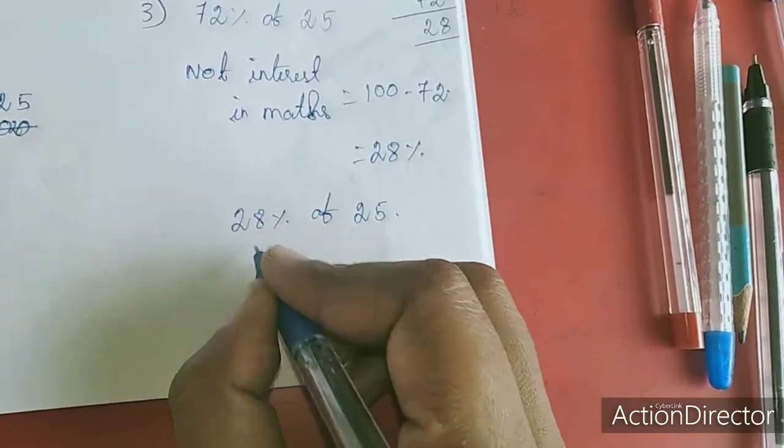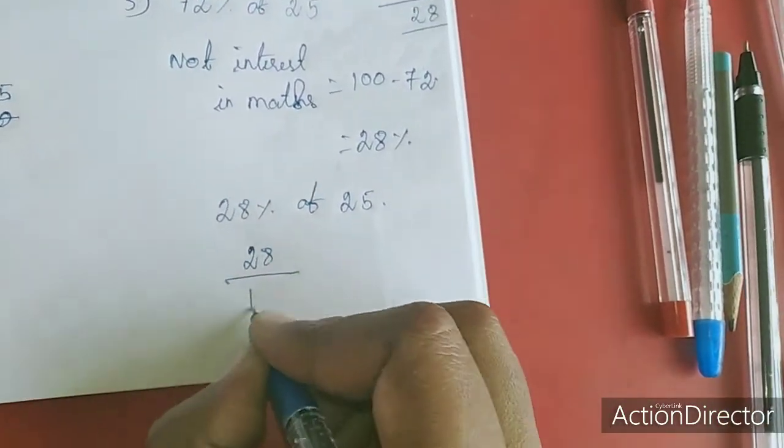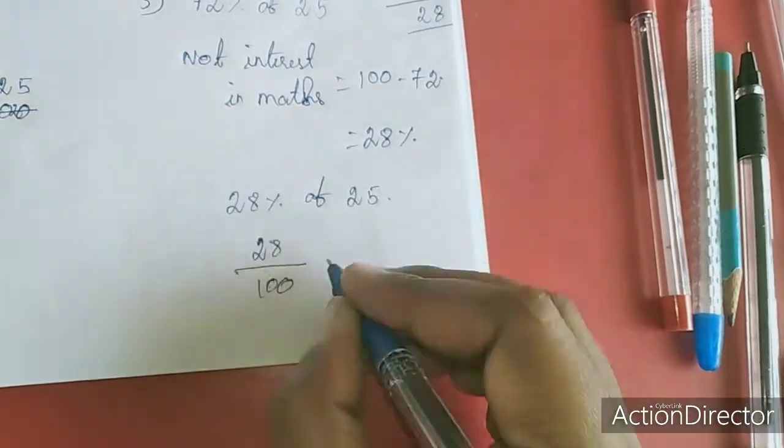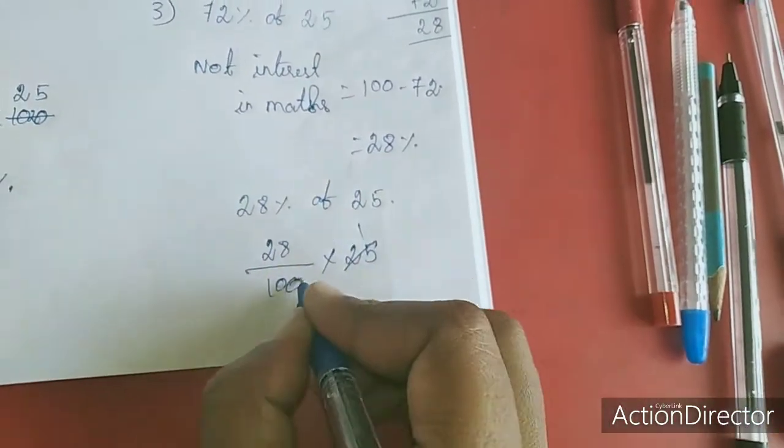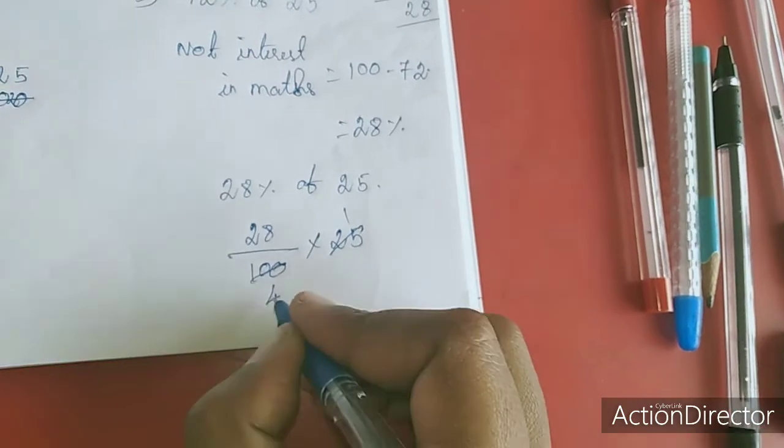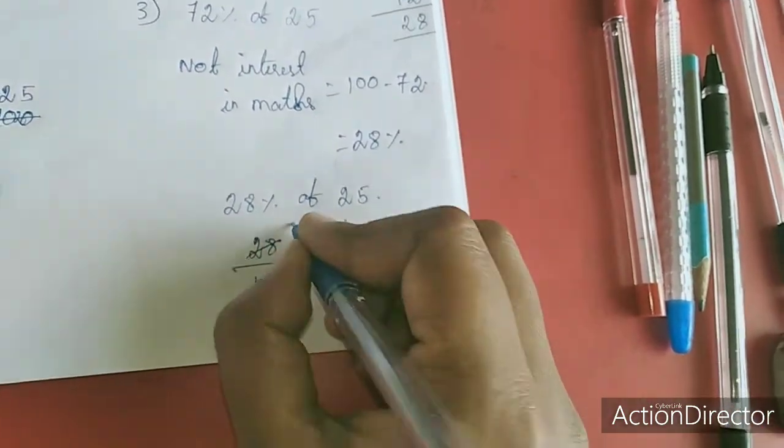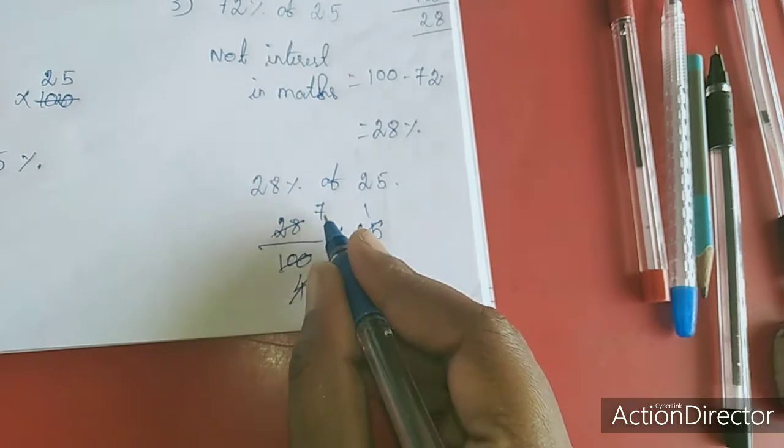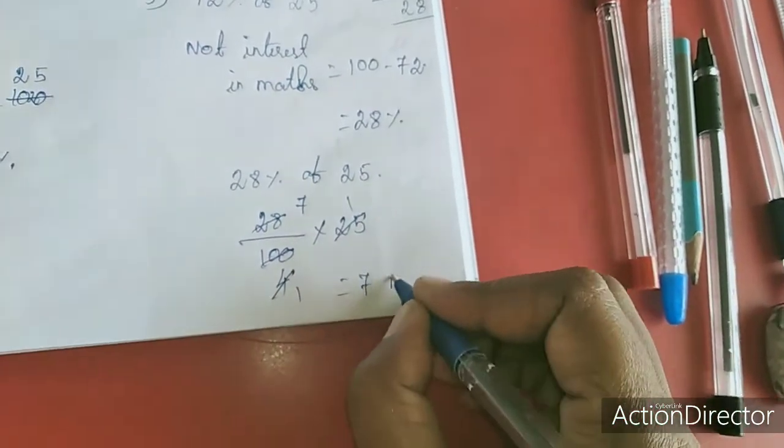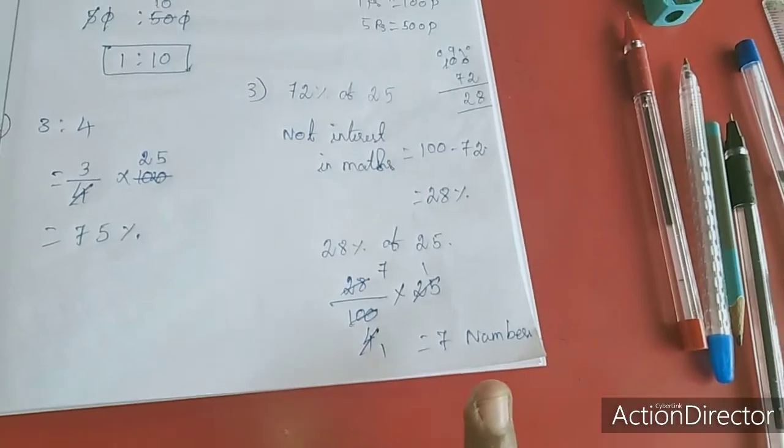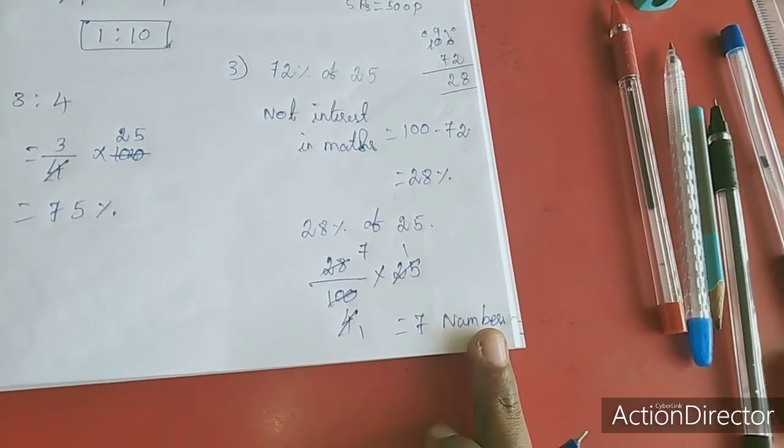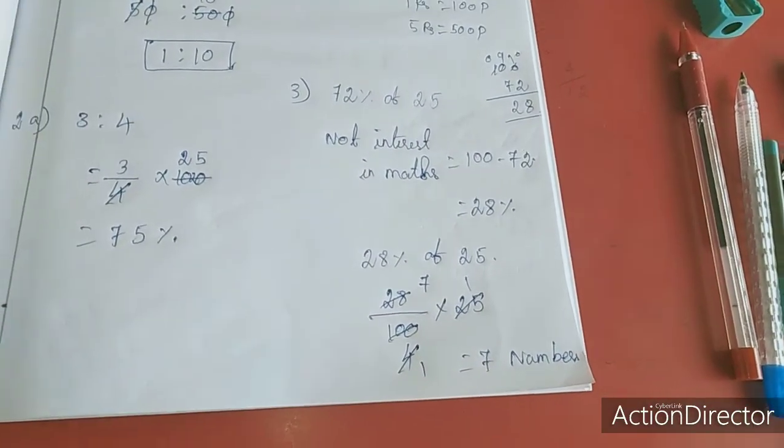So 28 percent of 25 students. 28 percentage, 28 by 100. We self know of means multiplication, this 25. Now 1 times 25 is 25, 4 times 25. 1 times 4 is 4, 7 times 4 is 28. So how many numbers not interested in math? 7 numbers. This is the answer for third sum. Up to this you have to copy in your note. Balance sums I will work out in the next class. Thank you dears.